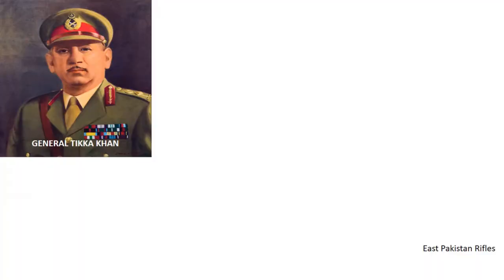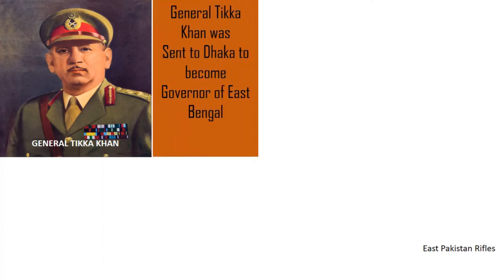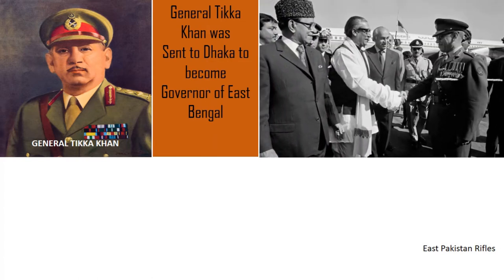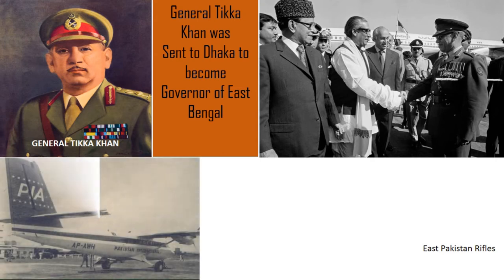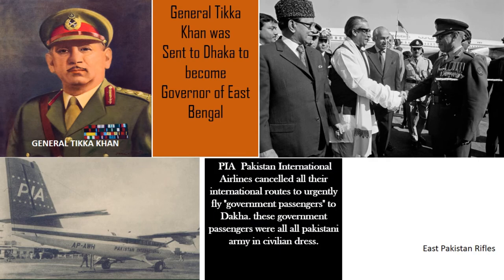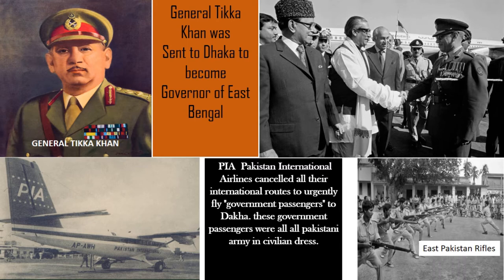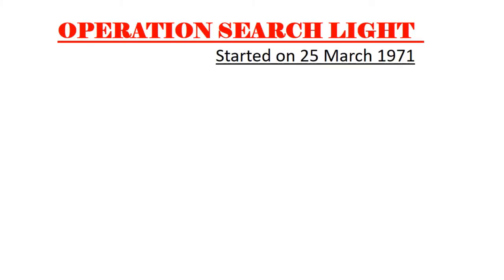General Tikka Khan was sent to Dhaka to become governor of East Bengal; East Pakistani judges, including Justice Siddiqui, refused to swear him in. Between 10th and 13th March, PIA — Pakistan International Airlines — cancelled all their international routes to urgently fly government passengers to Dhaka; these passengers were all Pakistani army personnel in civilian dress. A ship was also harbored in Chittagong port carrying ammunition and soldiers, but Bengali workers and sailors at the port refused to unload it. A unit of East Pakistani Rifles refused to obey commands to fire on Bengali demonstrators, beginning a mutiny among the Bengali soldiers — an indication that West Pakistanis had something very sinister planned.